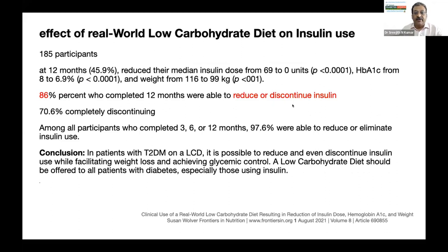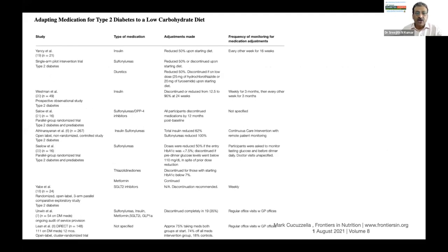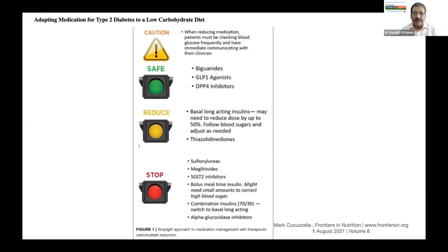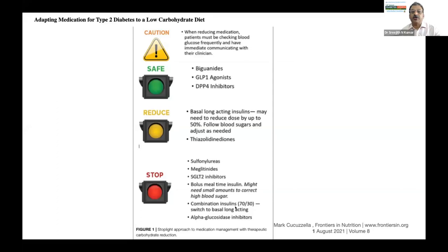Many patients can reduce or even discontinue insulin, and many trials show this benefit. When going for a low carbohydrate diet, be careful about medications. Drugs such as metformin, GLP-1 agonists, and DPP-4 inhibitors are safe and can be continued. Basal insulin should be reduced by around 50%, and thiazolidinediones may also need to be reduced as they produce weight gain. Sulfonylureas, meglitinides, SGLT-2 inhibitors, bolus insulin, alpha-glucosidase inhibitors, and 30/70 combination insulin will often have to be stopped — sulfonylureas and bolus insulins produce hypoglycemia.